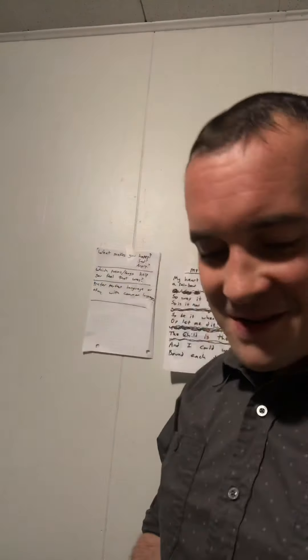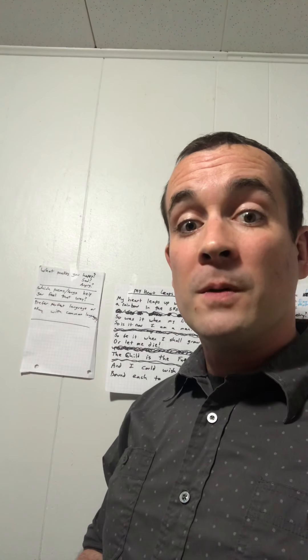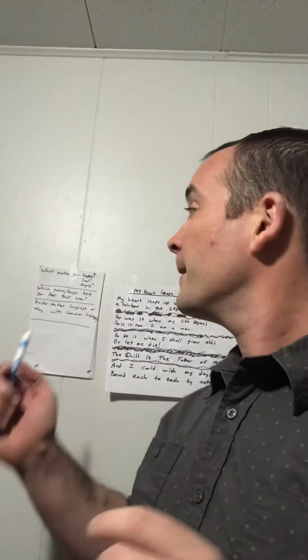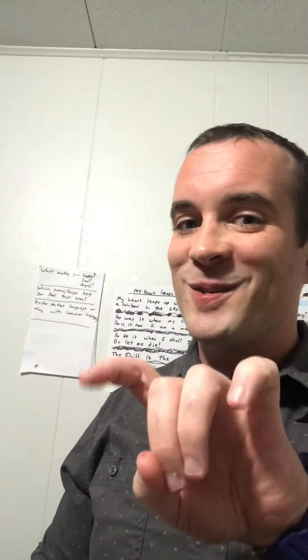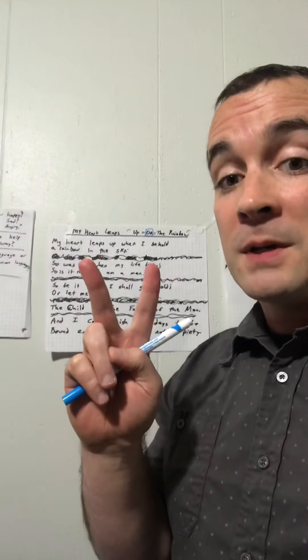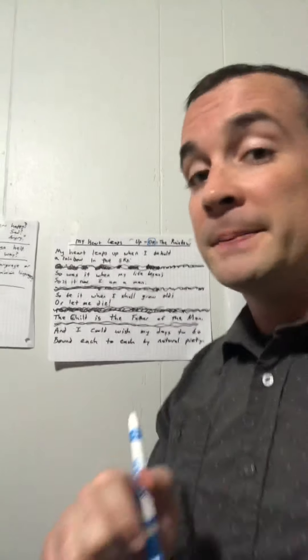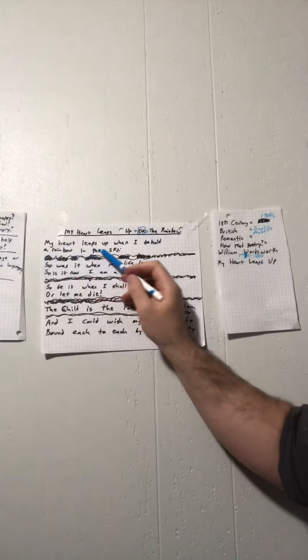William Wordsworth wrote this poem called 'The Rainbow,' also known as 'My Heart Leaps Up' — so it has two titles. We'll read it two times. Okay: 'My heart leaps up when I behold a rainbow in the sky.'